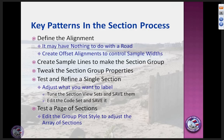You'll probably want to create offset alignments, which we'll show how to do. The basic process: have the alignment, create the sample lines, set the section group properties, test and refine a single section, then go to pages of sections if needed. When you get to producing pages of sections, I'll point out where you need to save your drawing as something else — at that point, think of it as publishing whatever you have to show.